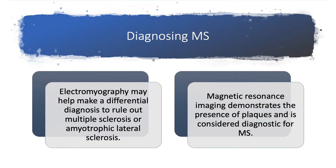Diagnosing MS is done by electromyography, which may help make a differential diagnosis to rule out whether this is ALS or MS. MRI can also be added, because magnetic resonance imaging demonstrates the presence of plaques and is considered diagnostic for determining multiple sclerosis.